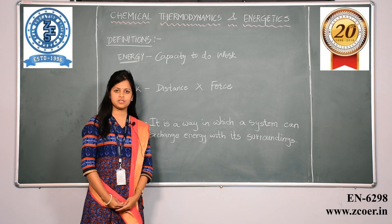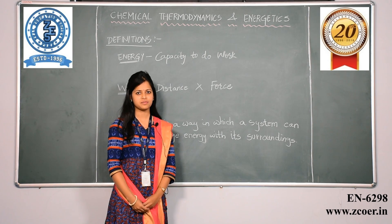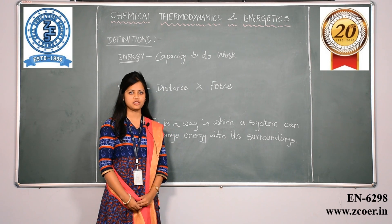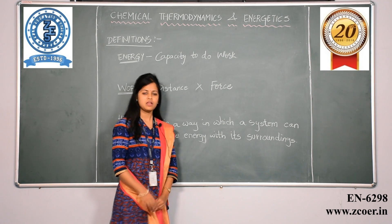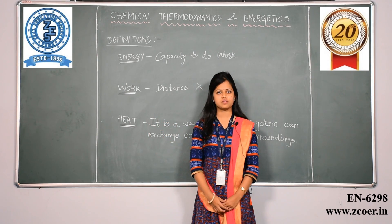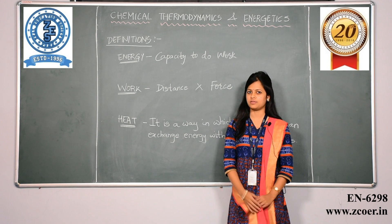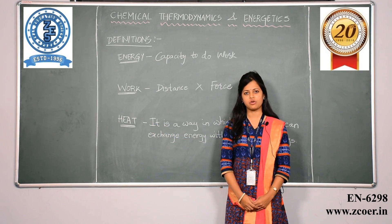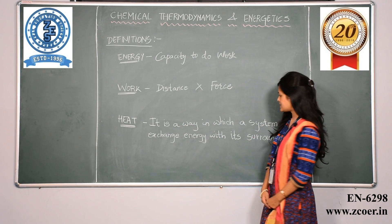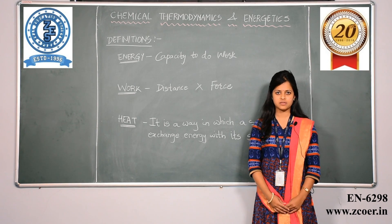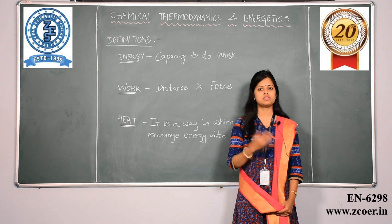Let us look at some common definitions related to thermodynamics. Energy is defined as the capacity to do work, and it can be in different forms such as kinetic energy, potential energy, and heat energy — all of which are interconvertible. Work can be defined as distance multiplied by the force which actually causes the motion. Heat is another form of energy — it is a way in which a system can exchange energy with its surroundings. When the surrounding and the system are at different temperatures, heat either flows into the system or flows out of the system.